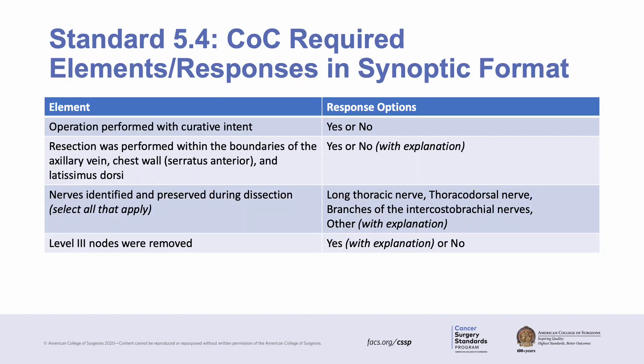This table summarizes the key components required in synoptic format for standard 5.4. As with the previous standard, the key elements must be reported in synoptic format. A completely narrative report that covers the elements will not be compliant. A properly built operative report must include all the following features in synoptic format, and the surgeon must choose an appropriate response for each from a predefined list of options. Specifically, this involves selecting whether the procedure is being done with curative intent, selecting whether the resection was performed within the boundaries of the axilla and if not, why, selecting whether specific nerves were identified and preserved and if not, why, and whether level 3 lymph nodes were removed and if so, why they were removed.